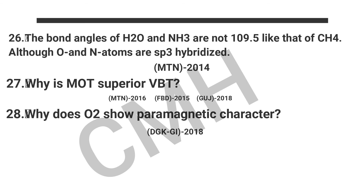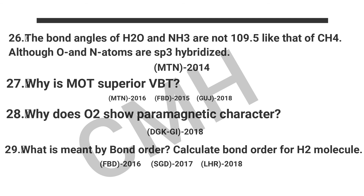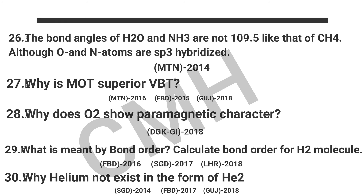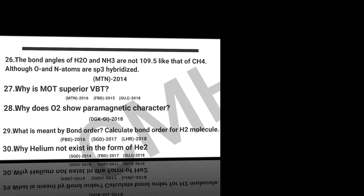Question number 27: Why is MOT superior to VBT? Question number 28: Why does O2 show paramagnetic character? Question number 29: What is meant by bond order? Calculate the bond order of the hydrogen molecule. Question number 30: Why does helium not exist in the form of an He2 molecule?